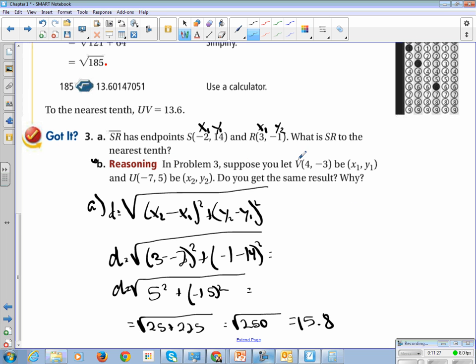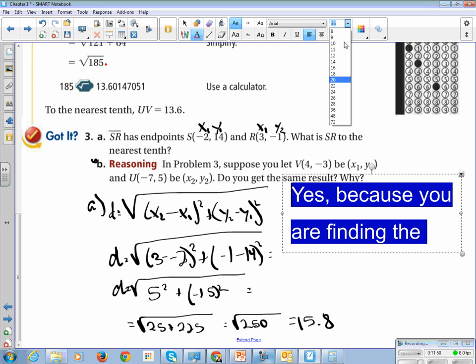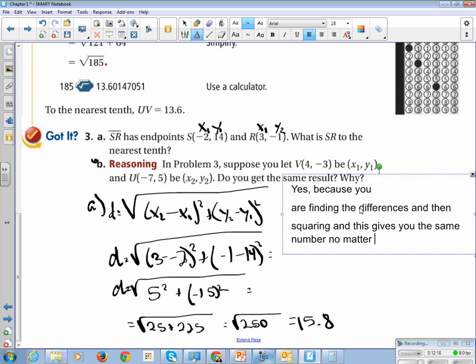Alright, and then to answer the reasoning, in problem 3, suppose you switch G and U. Do you get the same result, and why? Okay, the answer to this is yes, because you are finding the differences and then square root, and this gives you the same number no matter which order you use.